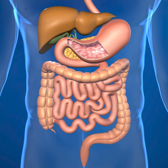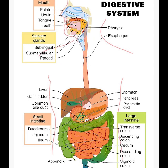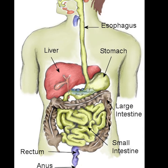The first stage, the cephalic phase of digestion, begins with secretions from gastric glands in response to the sight and smell of food. This stage includes the mechanical breakdown of food by chewing and the chemical breakdown by digestive enzymes that takes place in the mouth. Saliva contains the digestive enzymes amylase and lingual lipase, secreted by the salivary and serous glands on the tongue.